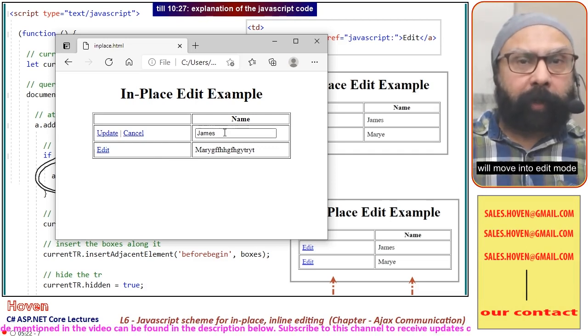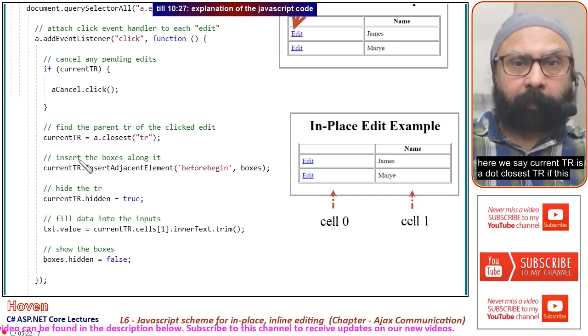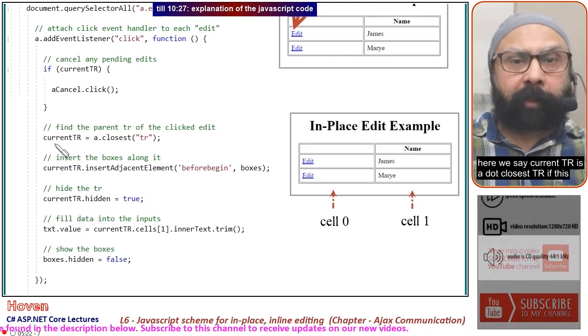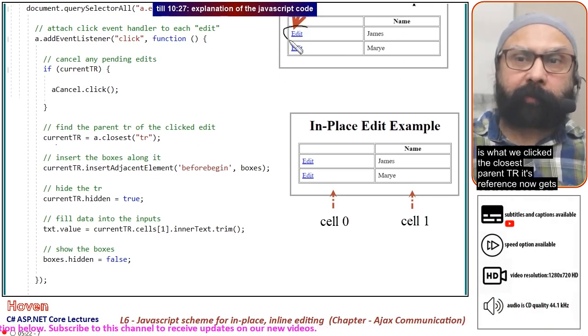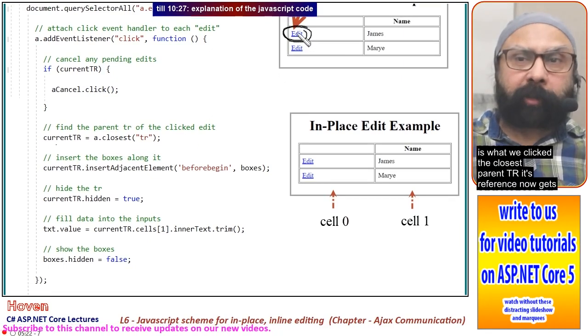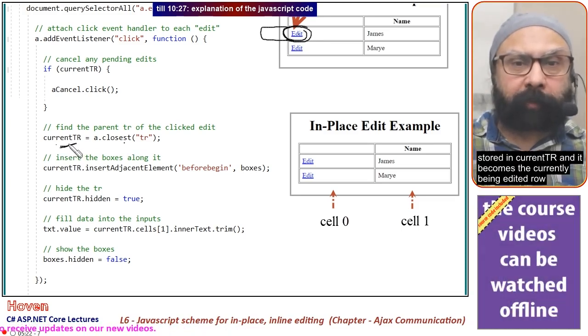If I've clicked this one and it's in edit mode, then click this one—the first moves out and the new record moves into edit mode. Here we say currentTr = a.closest('tr'). The closest parent tr reference gets stored in currentTr and becomes the currently edited row.